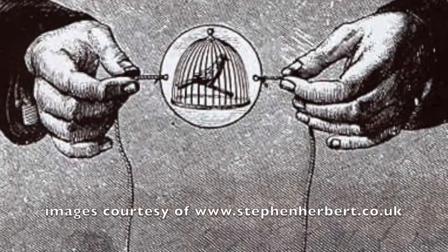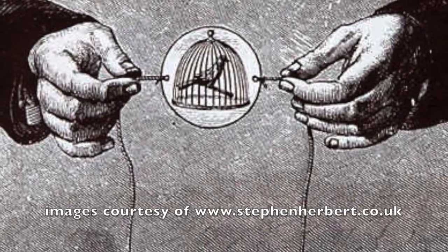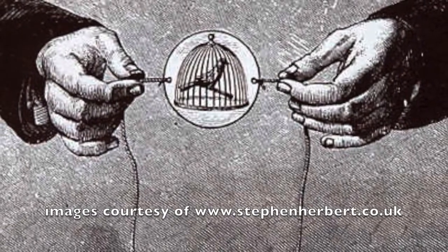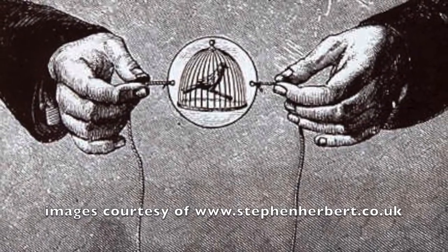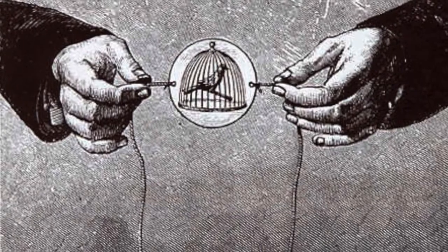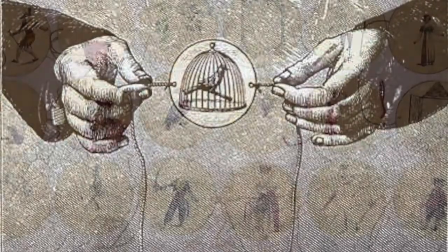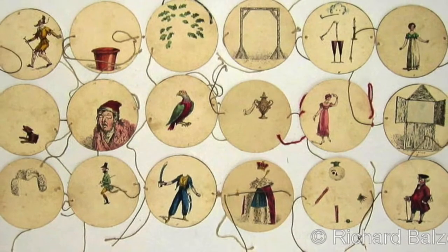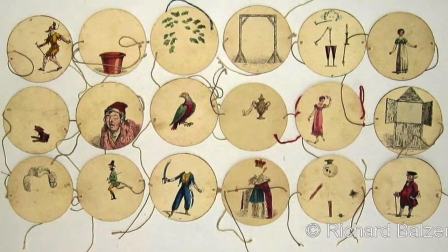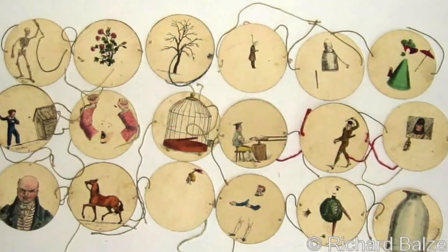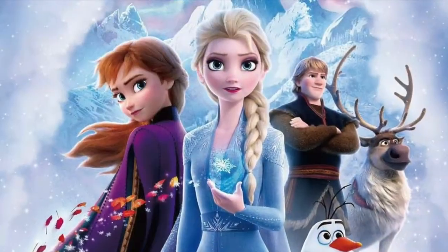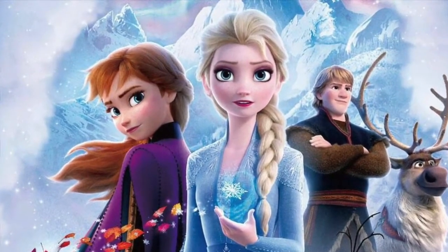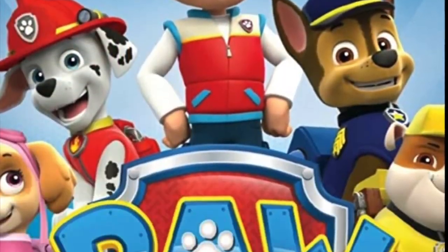A thaumatrope is an optical toy that was popular in the 19th century. A disc with a picture on each side is attached to two pieces of string, and when the strings are twirled quickly between the fingers, the two pictures appear to blend into one due to the persistence of vision. It's a moving image. Thaumatropes are basic examples of animation. So what's an animation? It's a series of moving drawings created to look like what we see in real life. Some examples are the movie Frozen and the cartoon Paw Patrol.